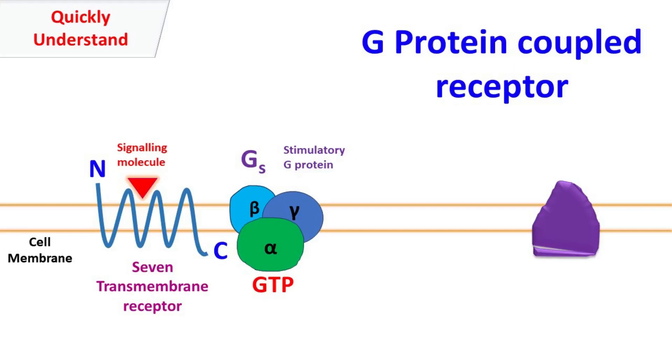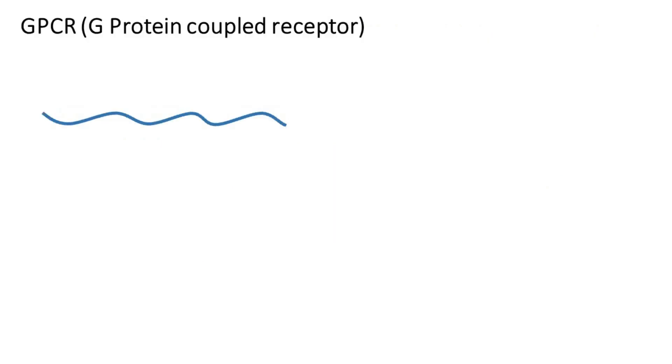G-protein coupled receptors are the largest and the most diverse group of membrane receptors in eukaryotes. The G-protein coupled receptor is made up of a single polypeptide chain.